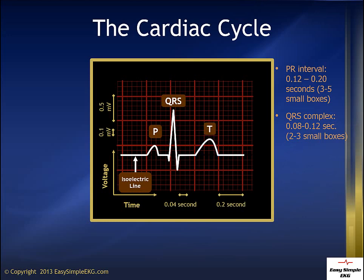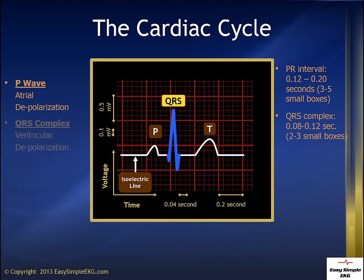The P wave represents atrial depolarization. The QRS complex represents ventricular depolarization, and the T wave represents ventricular repolarization.